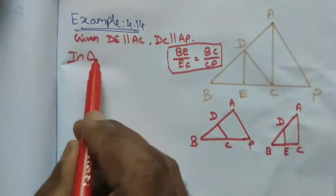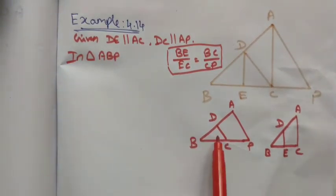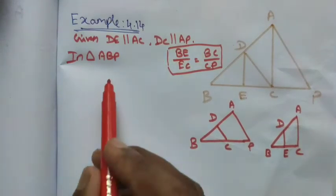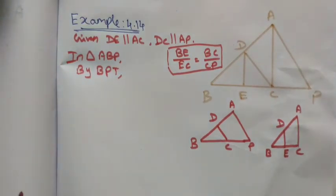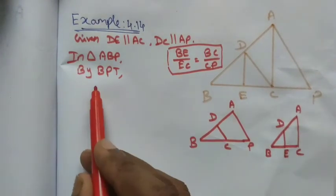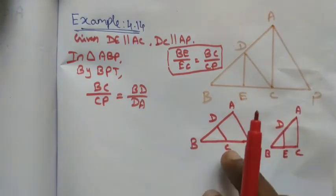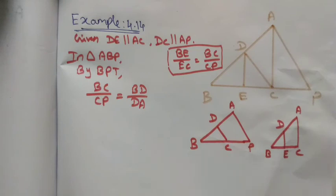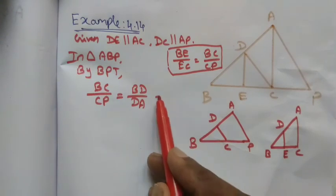In triangle ABP, DC is parallel to AP — that is given. By the Basic Proportionality Theorem (BPT), BC divided by CP is equal to BD divided by DA. Let me take this as equation number 1. We use this formula because the condition DC is parallel to AP allows us to apply BPT.